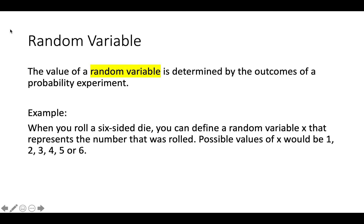We're going to talk about a random variable in the context of probability. The value of a random variable is determined by the outcomes of a probability experiment. For example, when you roll a six-sided die, you can define a random variable x that represents the number that was rolled. The possible values of x would be 1, 2, 3, 4, 5, or 6 — those are the only possible values for x because they represent the six different outcomes from rolling the die.